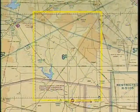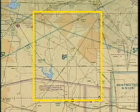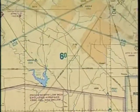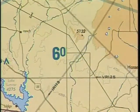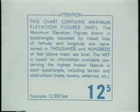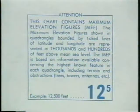Within each area enclosed by lines of latitude and longitude is a distinct number showing the maximum elevation figure, or MEF, in thousands and hundreds of feet. In this case, the six-zero represents six thousand feet. The MEF is the highest known feature in each quadrangle, including terrain and obstructions. An explanation of the MEF is usually found on or near the front panel.